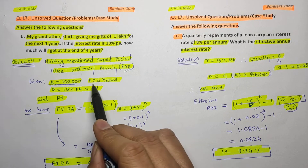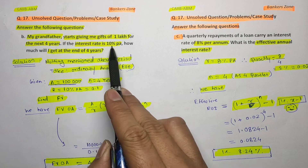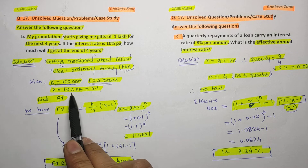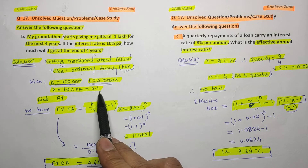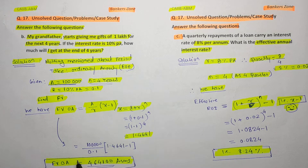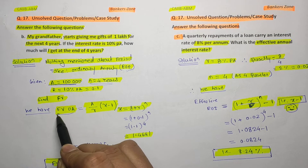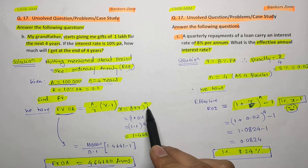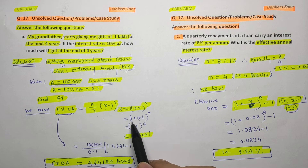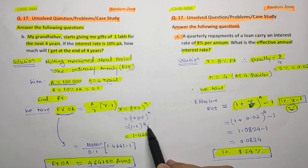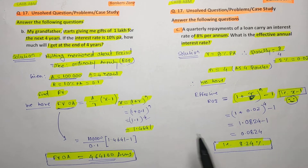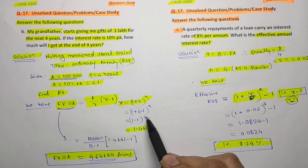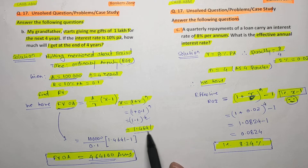The rate of interest is 10 percent, that is 0.1. We have to find the future value using the formula: Future Value of Ordinary Annuity = (A / r) × (x − 1), where x = (1 + r)^n. With r = 0.1, we get x = 1.1 raised to power 4. Using a simple calculator, multiply 1.1 four times to get x = 1.4641.